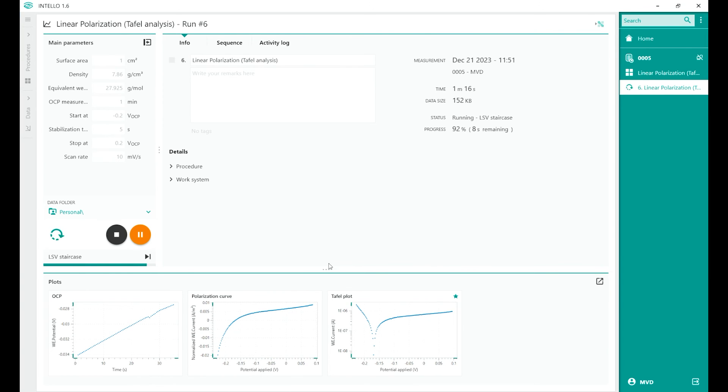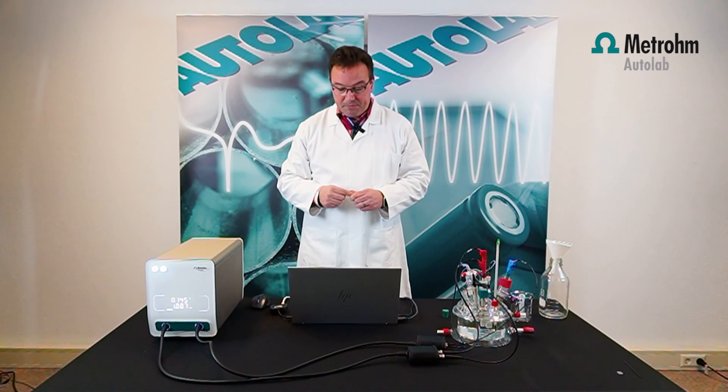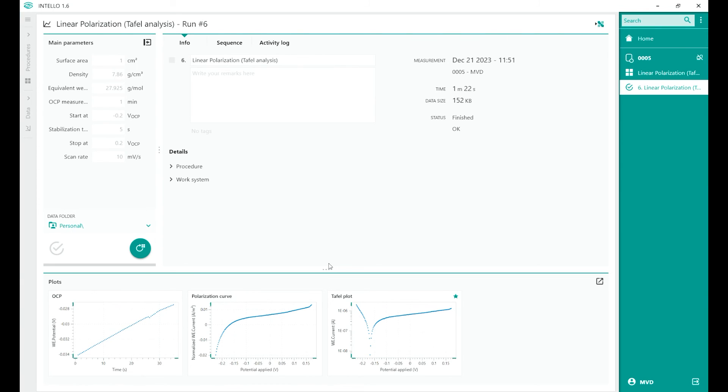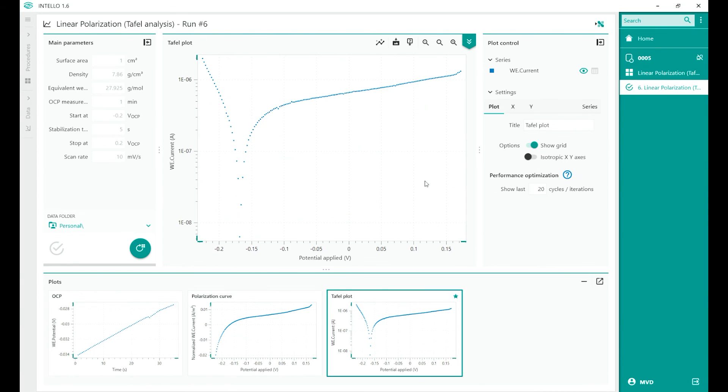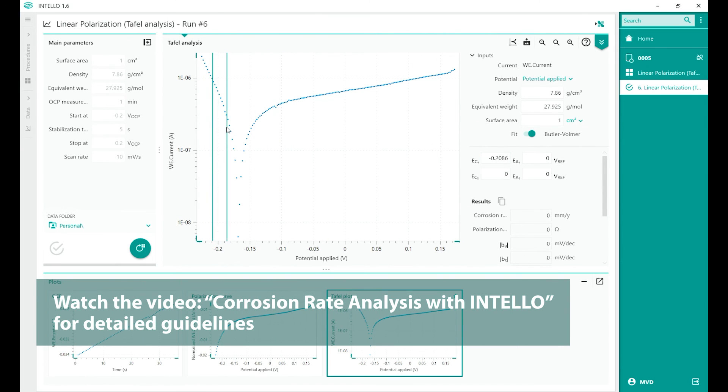Such markers define the lines for the linear regression according to the TAFEL equations. The measurement is finished. I can double click on the TAFEL plot. On the TAFEL plot, you can find perform analysis. There's the corrosion rate analysis, TAFEL analysis. We can set the markers on each part of the branches.